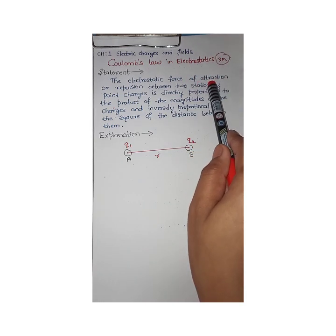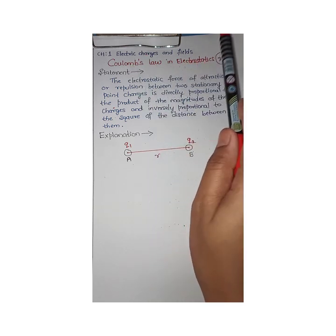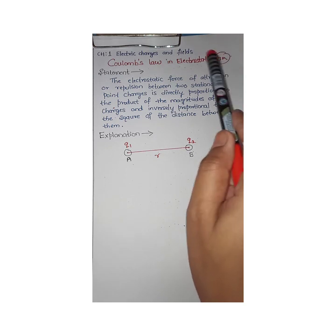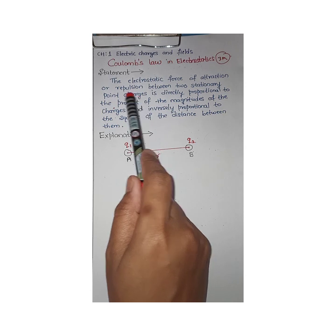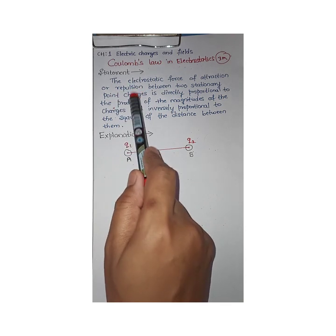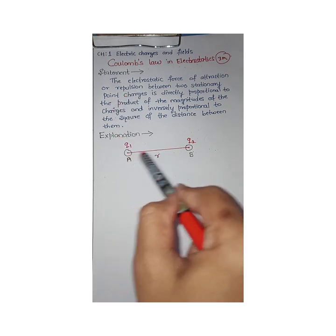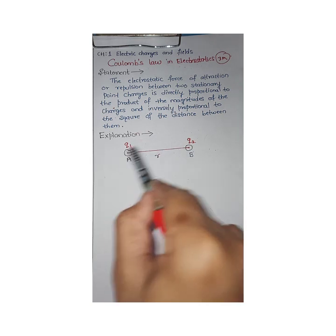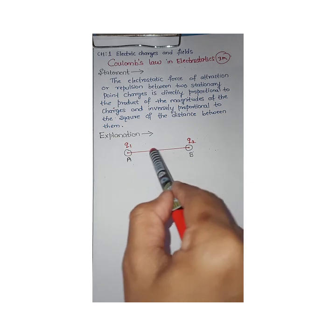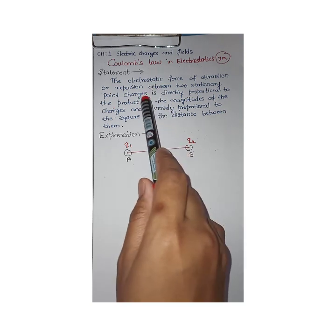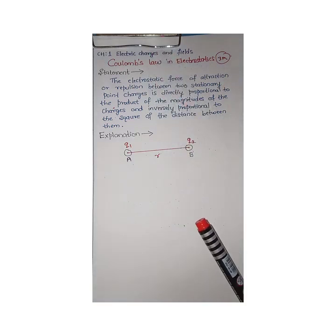Coulomb's Law in electrostatics is applicable only for stationary charges — charges which are at rest. The other condition is that the charges must be point charges. A point charge means the size of the charge is very small, like a dot, and that size must be very small compared to the distance between them.